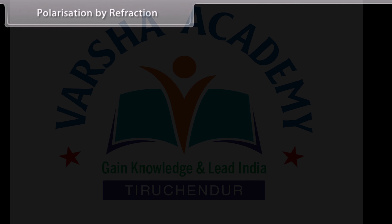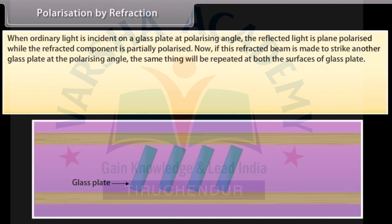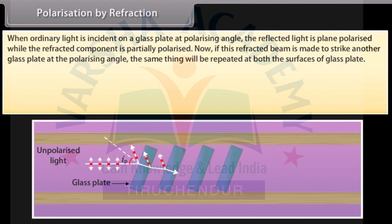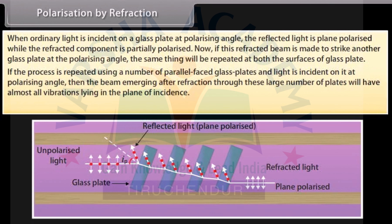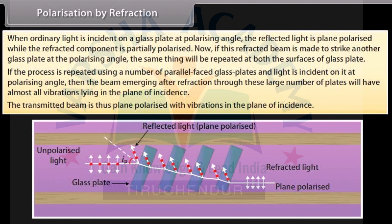Polarization by refraction. When ordinary light is incident on a glass plate at the polarizing angle, the reflected light is plane polarized while the refracted component is partially polarized. If this refracted beam is made to strike another glass plate at the polarizing angle, the same thing will be repeated at both surfaces. If the process is repeated using a number of parallel-placed glass plates with light incident at the polarizing angle, then the beam emerging after refraction through these large number of plates will have almost all vibrations lying in the plane of incidence. The transmitted beam is thus plane polarized with vibrations in the plane of incidence.